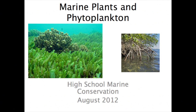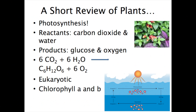Marine Plants and Phytoplankton for High School Marine Conservation, August 2012, by Morgan Brunel. A short review of plants: plants are photosynthetic, meaning they take carbon dioxide and water and make glucose and oxygen. They're eukaryotic, meaning they have a nucleus, and they contain chlorophyll A and B.